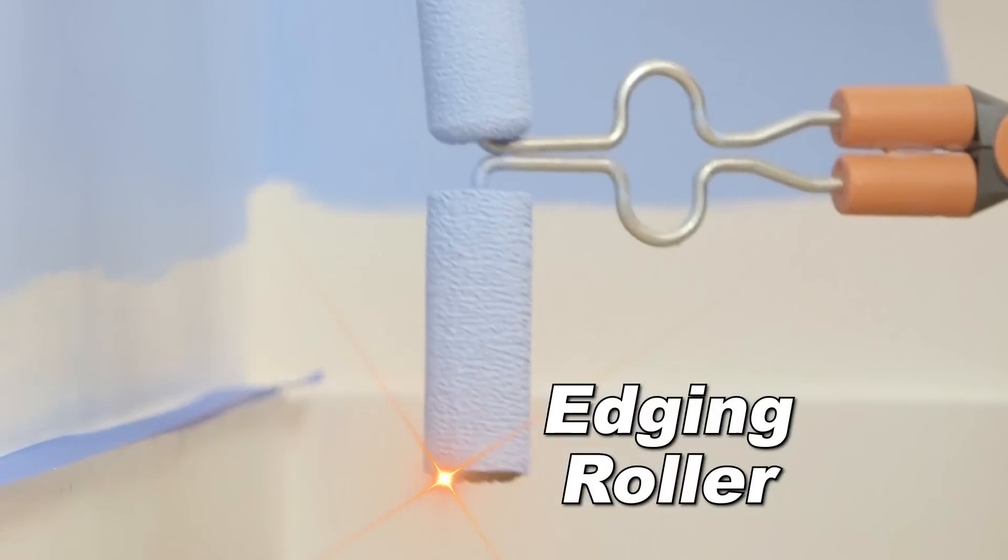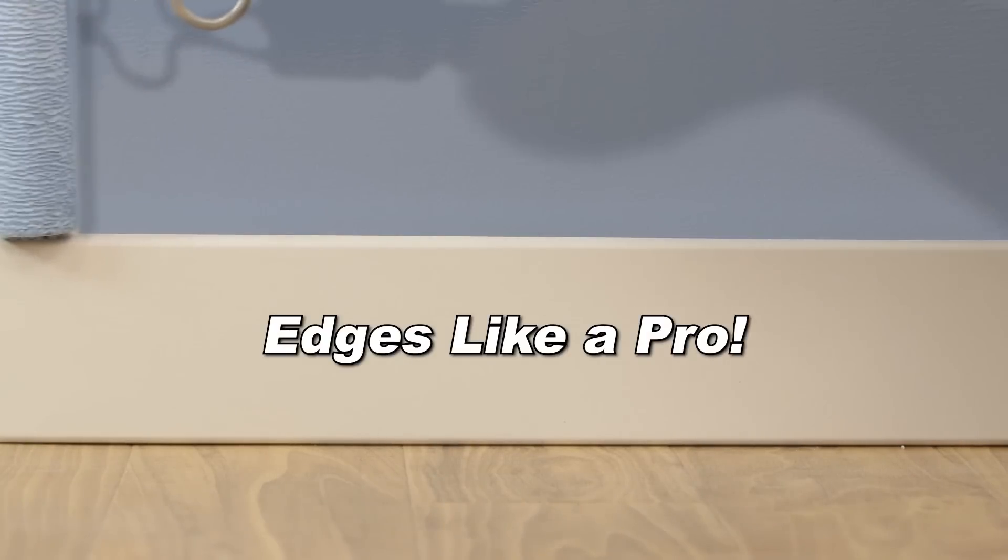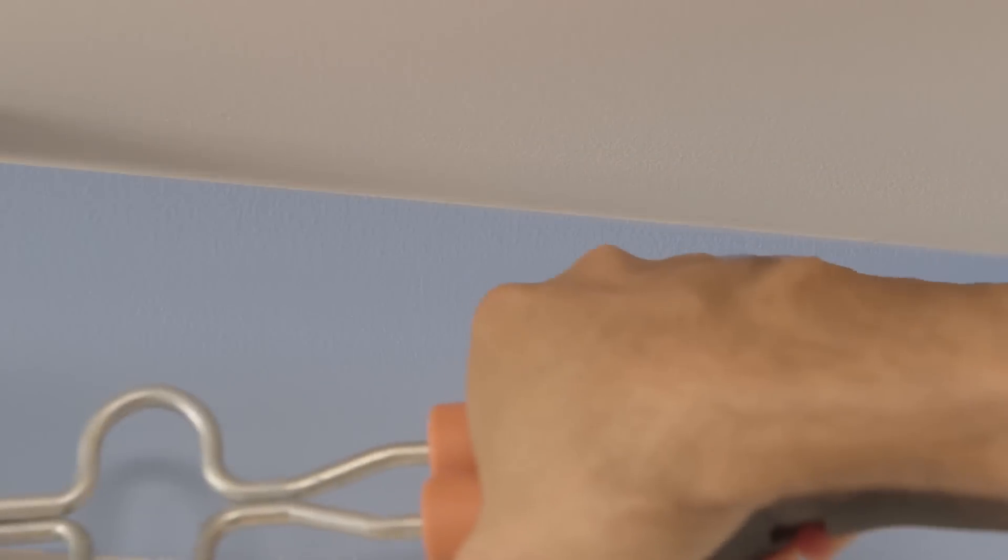Just flip it to the edging roller. Ditch the masking tape and brush. The X-Glide edges like a pro. Baseboards and ceilings, even around controls.